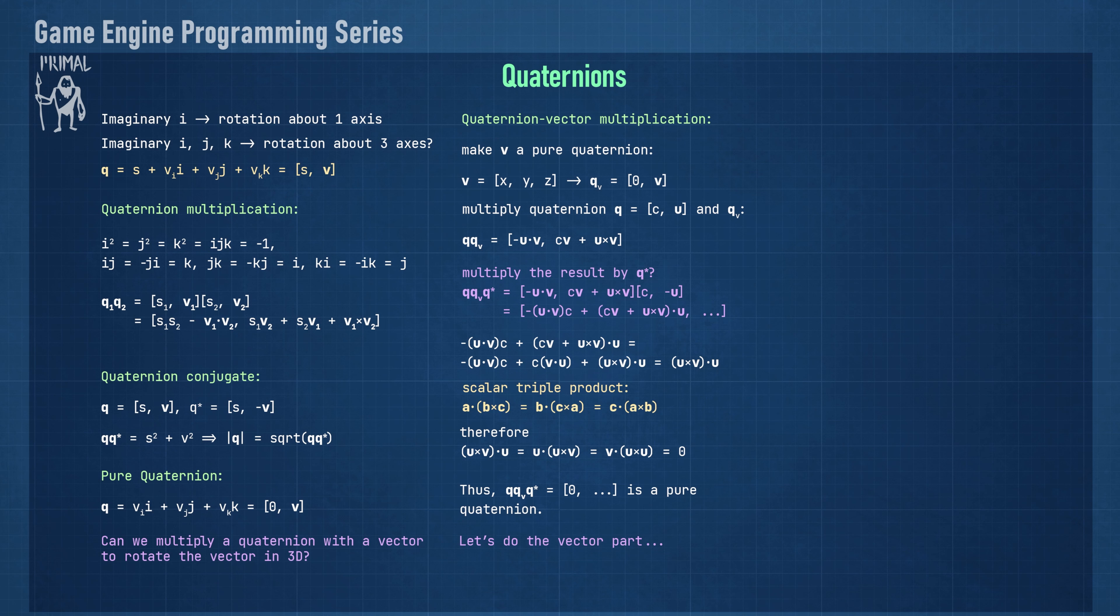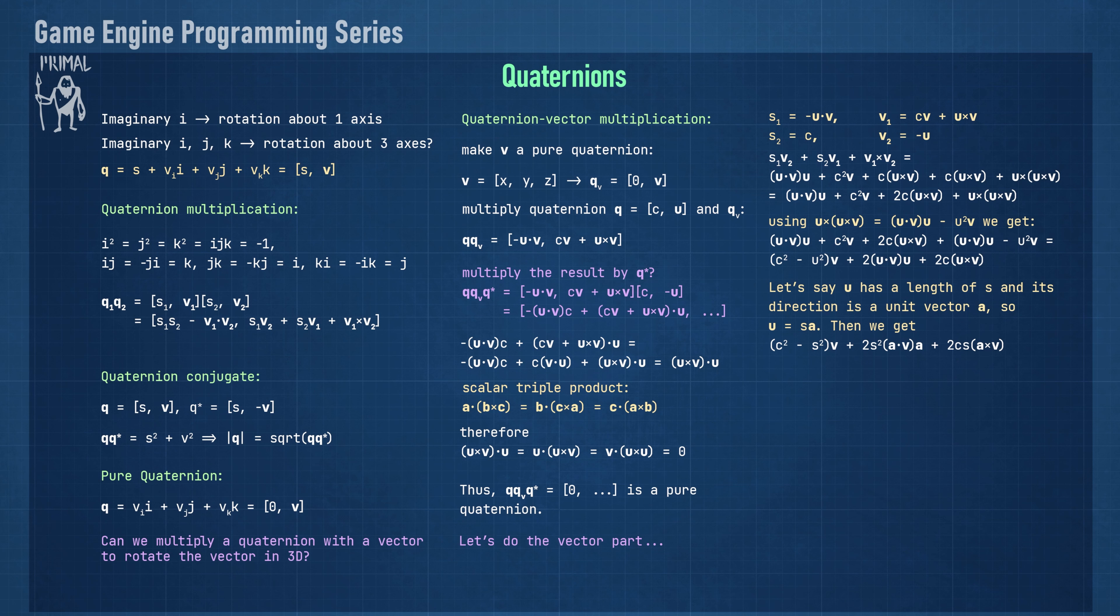Okay, let's continue with the vector part. To make it easier, I've identified each term in the multiplication formula, so all we have to do is fill them in. Remember that c is a scalar part of our rotation quaternion. Using this cross product identity, we can rewrite the result like so. Now let's say that the vector part u of our rotation quaternion is a vector with length s and direction a. We can then again rewrite the result of our quaternion vector multiplication. Doesn't this look familiar?